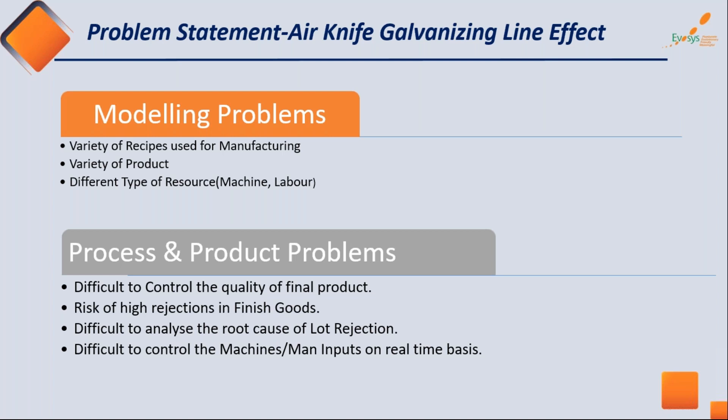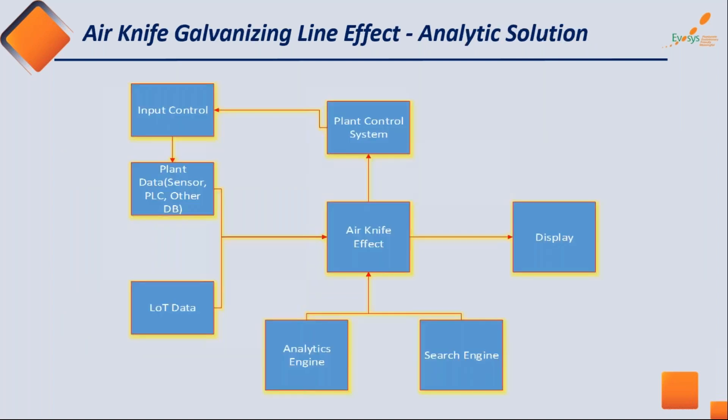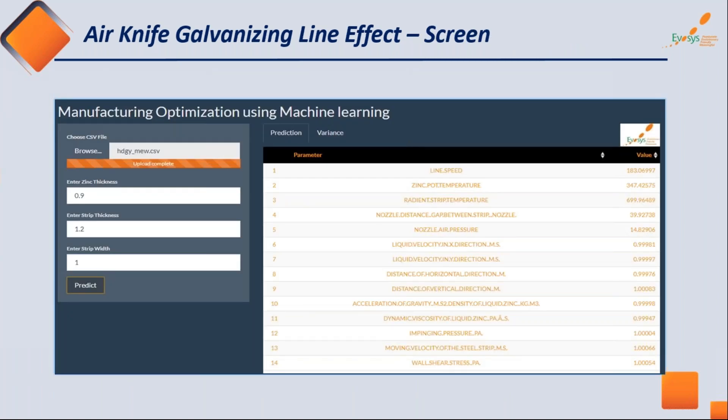We designed a layman-friendly solution: we collect the sensor and PLC data for each executed lot, observe the output, and then using a particular algorithm, we train the algorithm to control plant sensor data. On the left-hand side of the interface, inputs include zinc thickness, strip thickness, and strip width — the quality target, for example: 0.9 microns of zinc thickness on one meter of aluminium strip width.